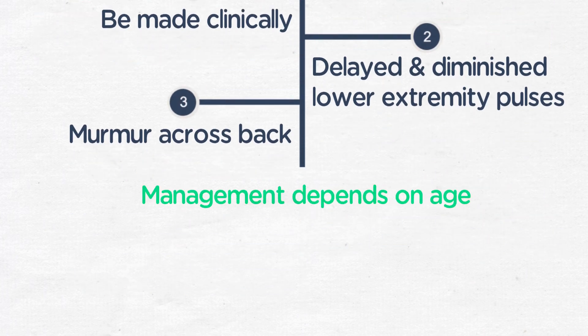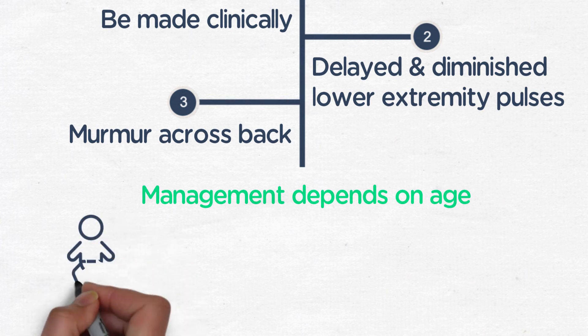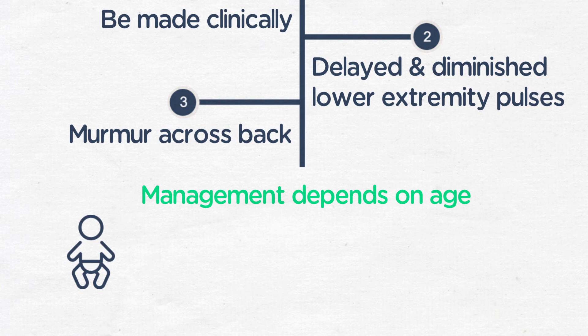Management of coarctation depends on the age at presentation. In infants who present in cardiogenic shock, you can use a prostaglandin infusion to relax the isthmus or potentially even open the arterial duct until definitive surgical management, which is usually done via an end-to-end anastomosis with resection of the narrowed coarctation segment.